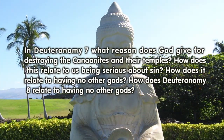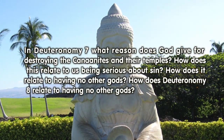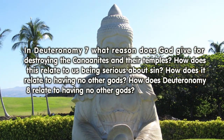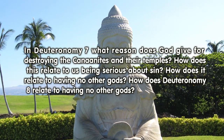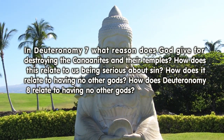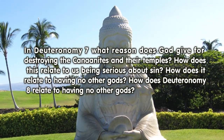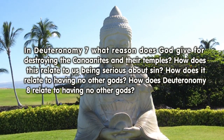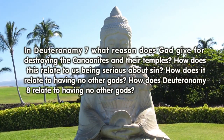In Deuteronomy 7, what reason does God give for destroying the Canaanites and their temples? How does this relate to us being serious about sin? How does it relate to having no other gods?